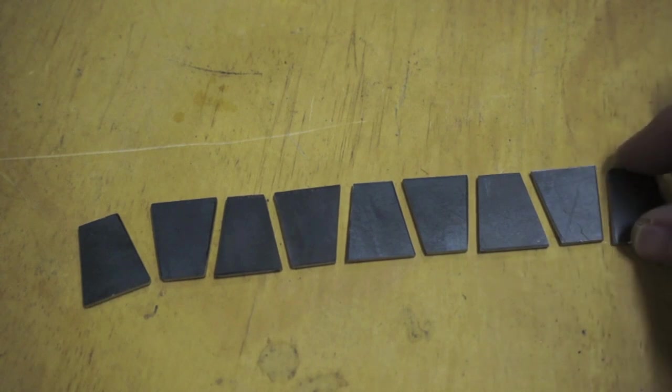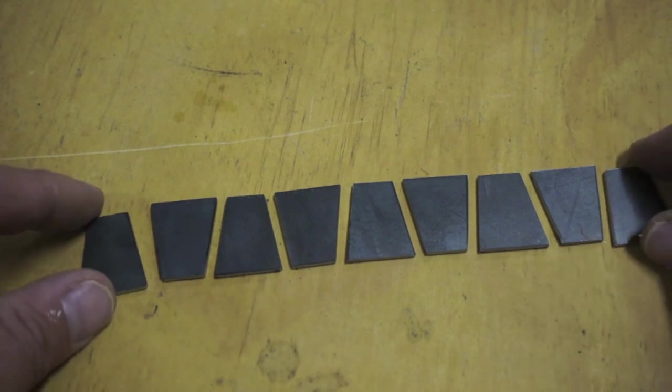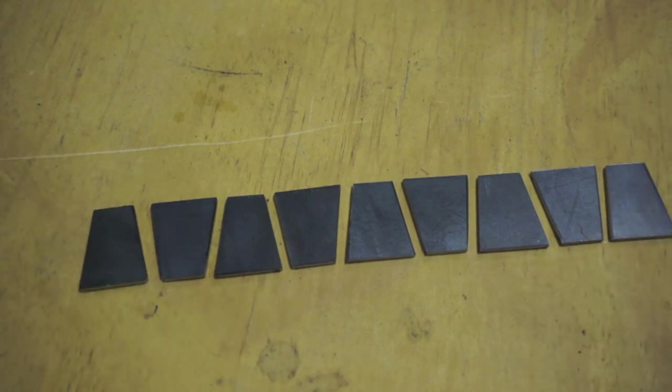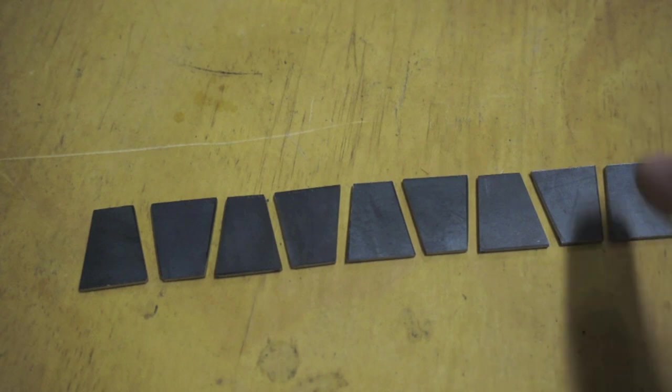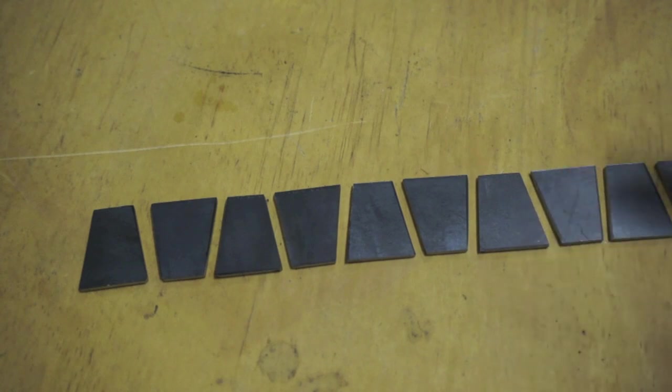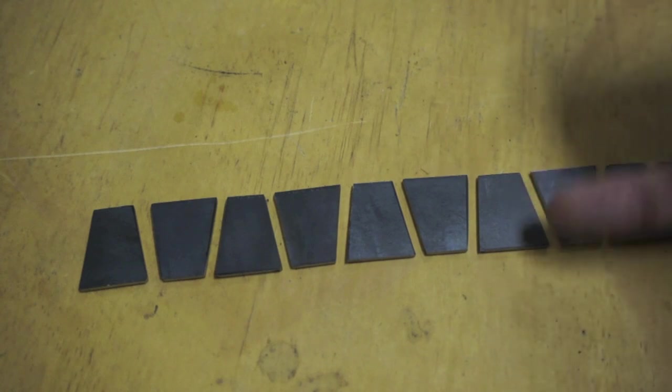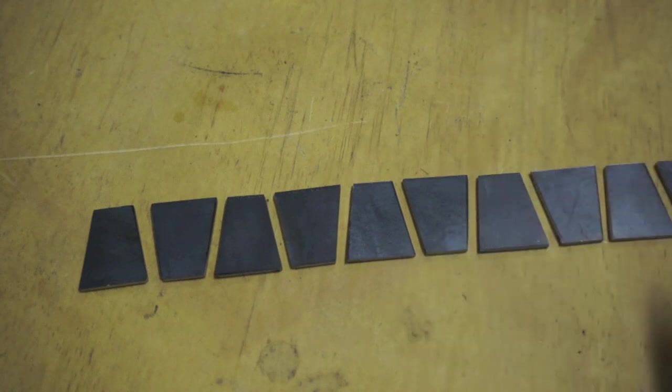I think I'm still going to sand them, but I'm still deciding whether or not to kind of leave them more of this industrial rustic. But anyway, next thing I'm going to do is either sand them or not, and then I'm going to drill all the corresponding holes - four holes for each one.